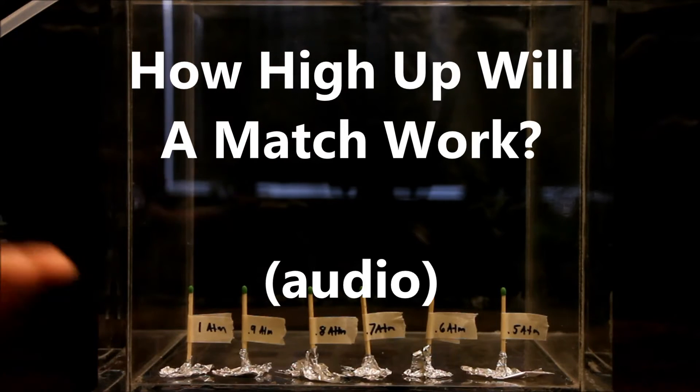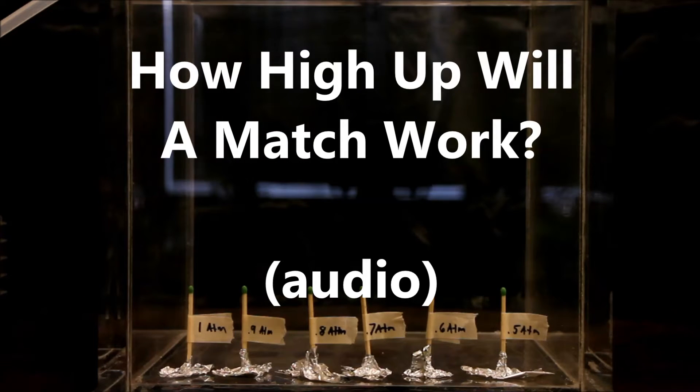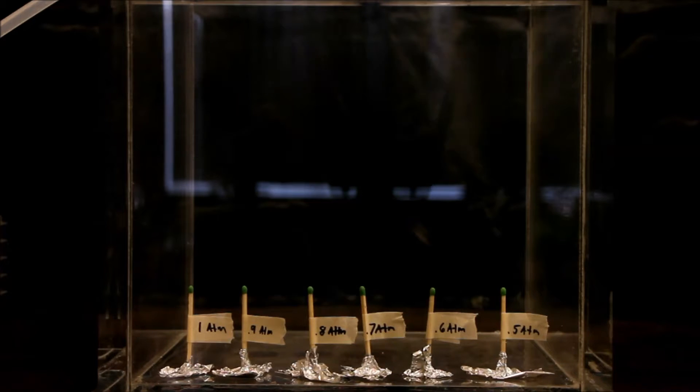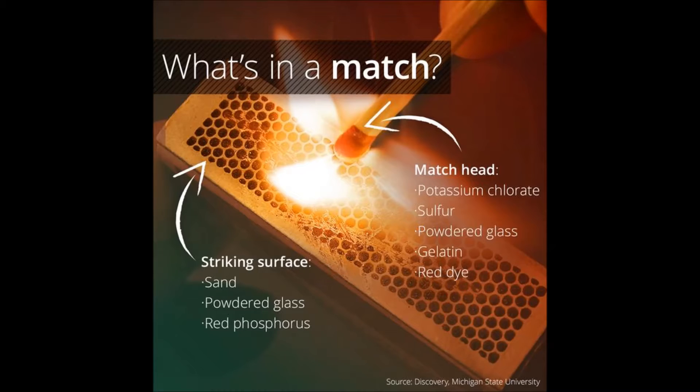Alright, so today we're going to be experimenting with how matches light off in a vacuum chamber. So matches, when they're lit, are a chemical reaction between the oxidizer and the match head, which is usually something like potassium chlorate, and the fuel, which is usually some kind of sulfur compound.